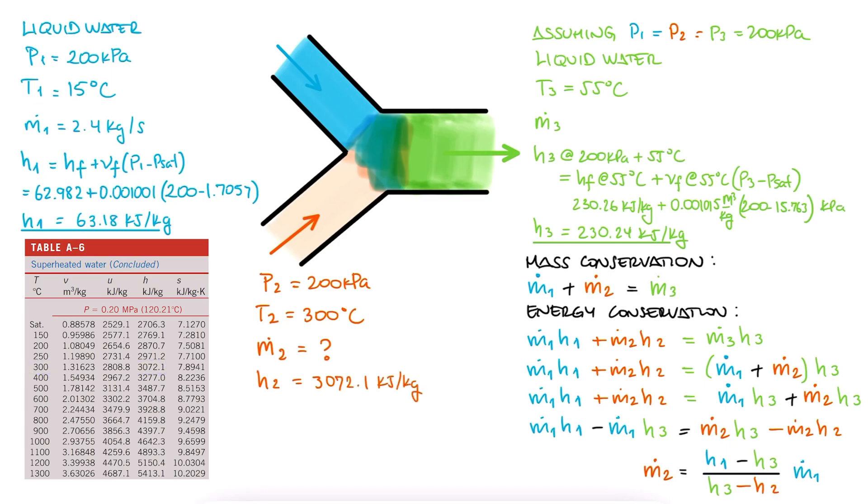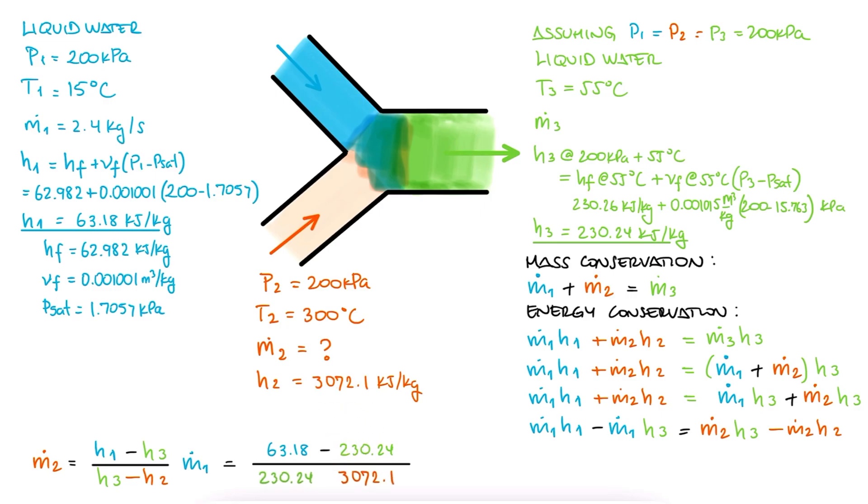With all three values for specific enthalpy, we substitute them in the expression for mass flow and obtain the mass flow rate of superheated steam at inlet 2.